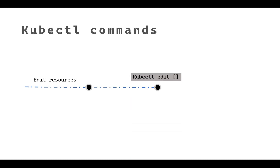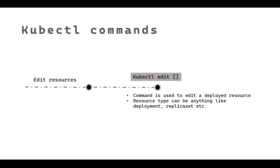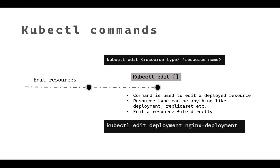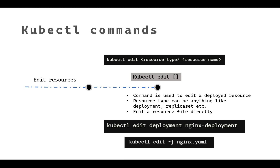The final command is `kubectl edit`, which is used to edit deployed resources such as deployments, replica sets, or any kind of resource. You edit the resource file directly. For example, `kubectl edit deployment nginx-deployment` lets you change the number of replicas or the image name. You can also edit a manifest file directly using `kubectl edit -f` and apply the changes. This command is useful for making quick changes to deployment resources.